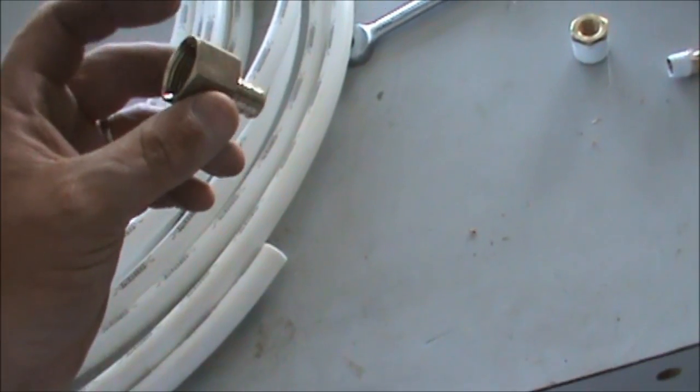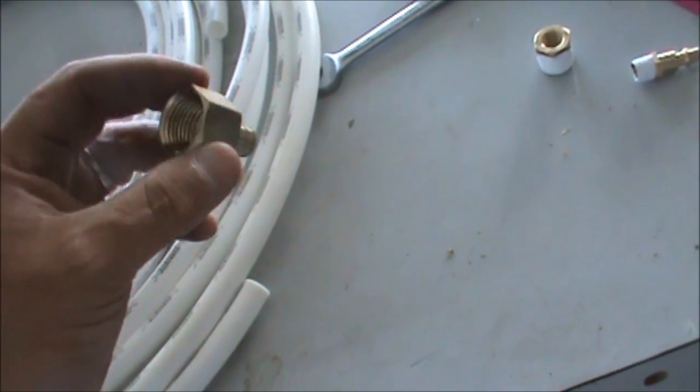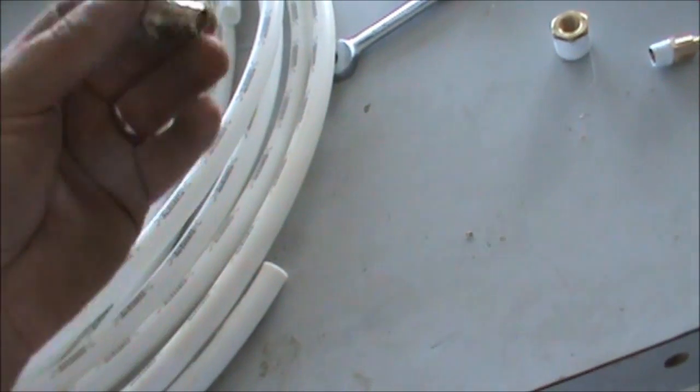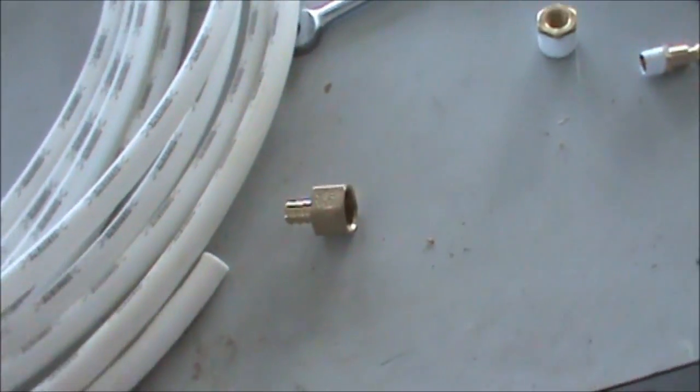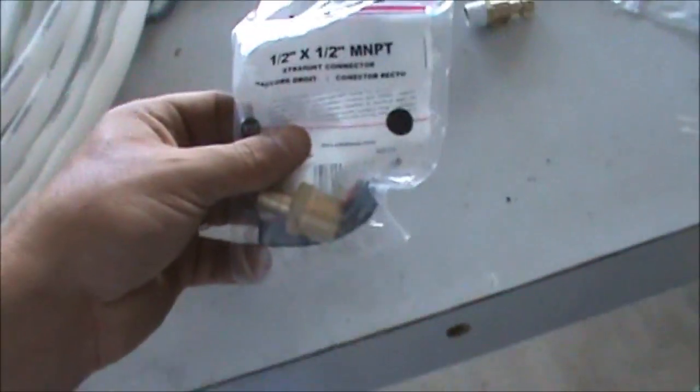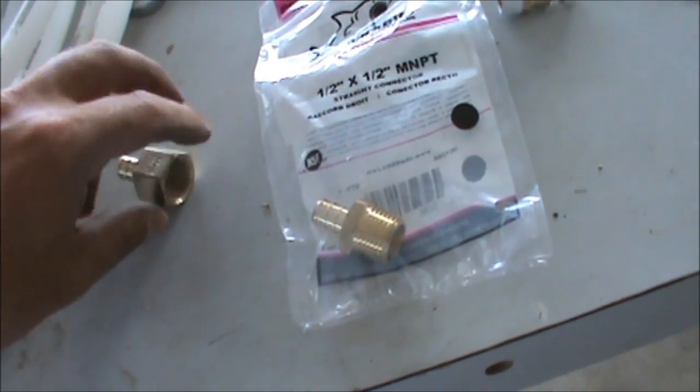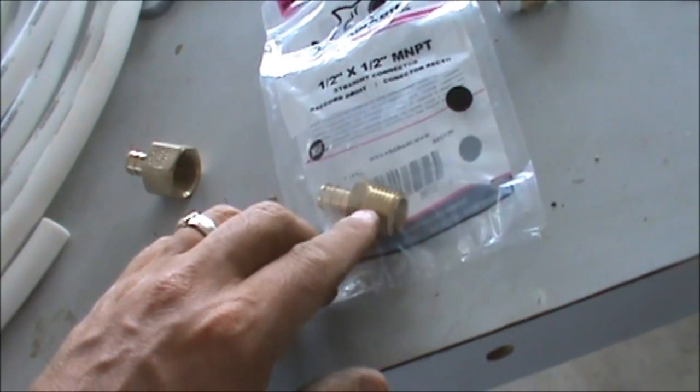So we have a female, looks like that. Here's a male, it's kind of the opposite. So the threads on the inside of the female, and the male, the threads are on the outside.